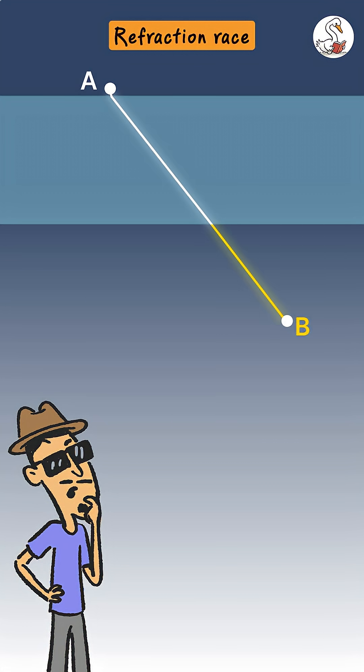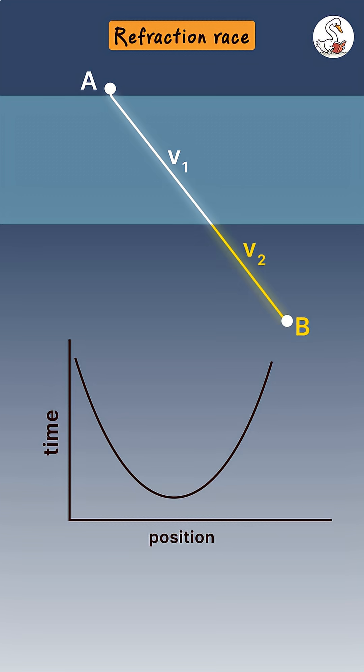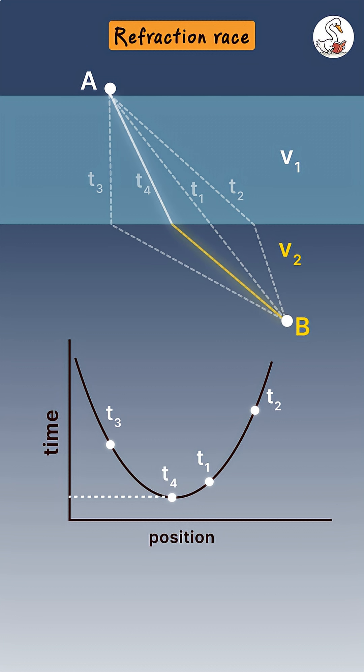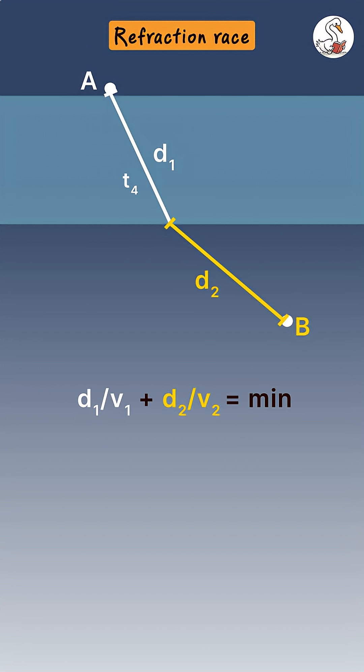When light travels from one medium to another, where its speed changes, it chooses the path that allows it to go from one point to another in the least possible time. And in trying to take the least time path, light bends. That bending is what we call refraction.